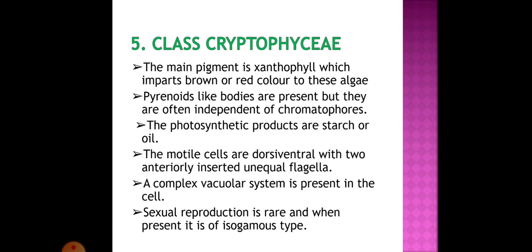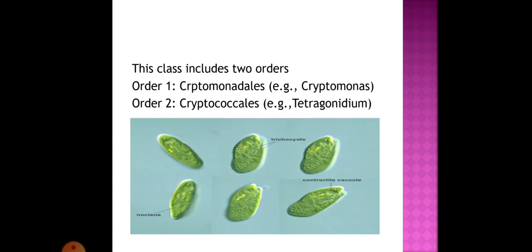Moving on to the next class: Cryptophyceae. The main pigment is xanthophyll which imparts brown or red color to these algae. Pyrenoid-like bodies are present but often independent of chromatophores. The photosynthetic products are starch or oil. Motile cells are dorsiventral with two anteriorly inserted unequal flagella. A complex vacuolar system is present in the cells. Sexual reproduction is rare and when present it is of isogamous type. It includes two orders: Cryptomonadales (example: Cryptomonas) and Cryptococcales (example: Tetragonidium). The picture of Cryptomonas shows contractile vacuoles, trichocysts, and nucleus.